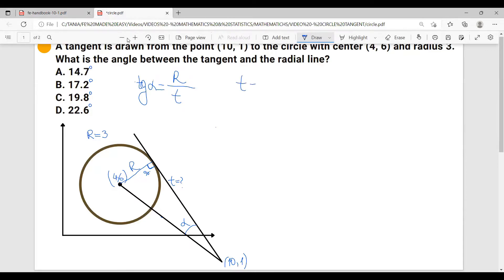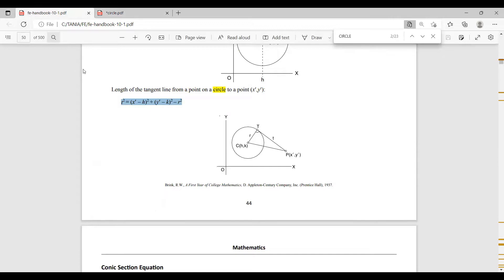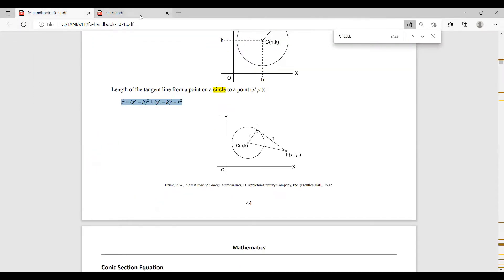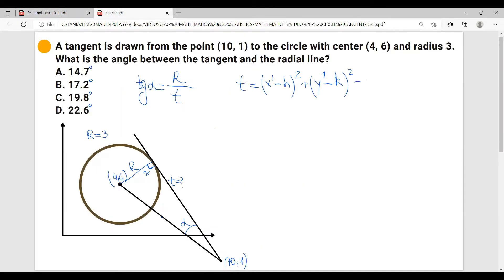Going back to the FE handbook, the formula for the tangent is right here. So tangent equals to (x' - h)² plus (y' - k)² minus radius squared. We are given the center, the h and k are 4 and 6, and the radius is 3.